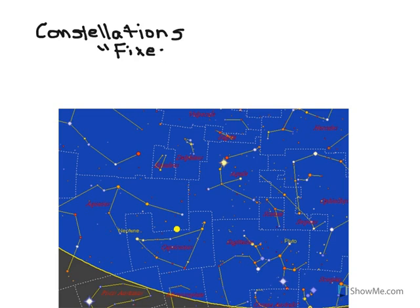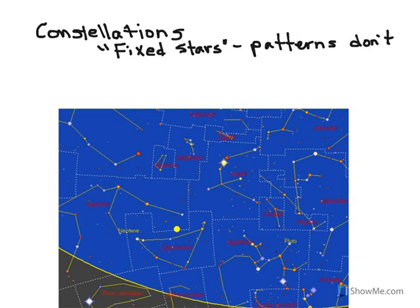Constellations are sometimes called the fixed stars. And that is not because they don't move—because we see them rise and set—but the patterns don't change, at least not in a human lifetime. Now if you lived for tens of thousands of years, yes, the patterns would change a little bit, because the stars do in fact move. But they're so far away, we don't see the motion very easily in a human lifetime.